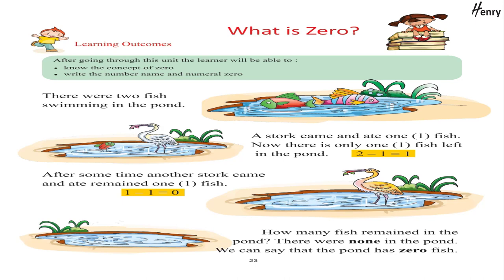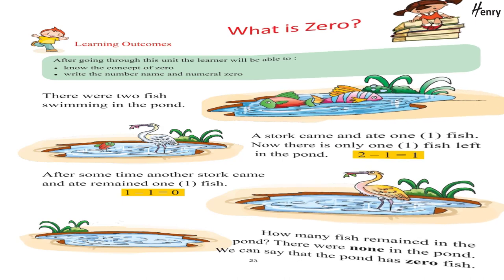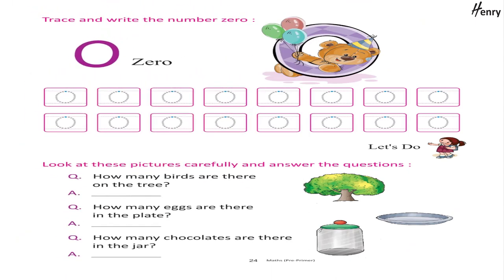There were two fish swimming in the pond. A stork came and ate one fish — now there is only one fish left. After some time, another stork came and ate the last fish. How many fish remained in the pond? There were none — we can say the pond has zero fish.